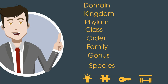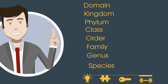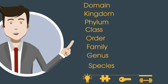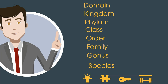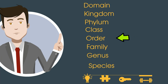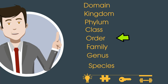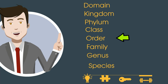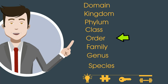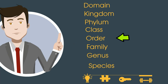Domain is the broadest category and has the greatest number of organisms, and Species would be the most specific. I sometimes get confused going from Class, Order, Family, and flip those around.